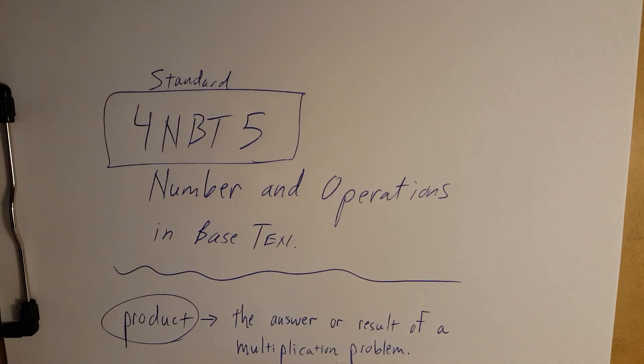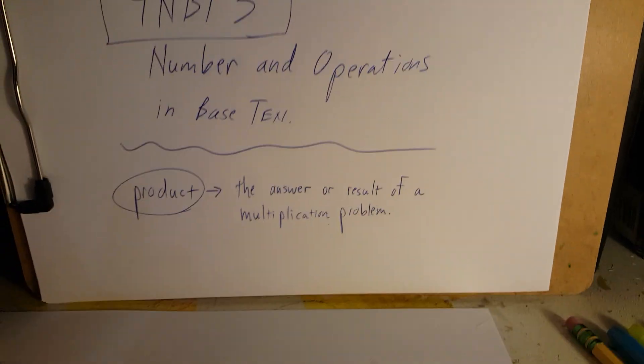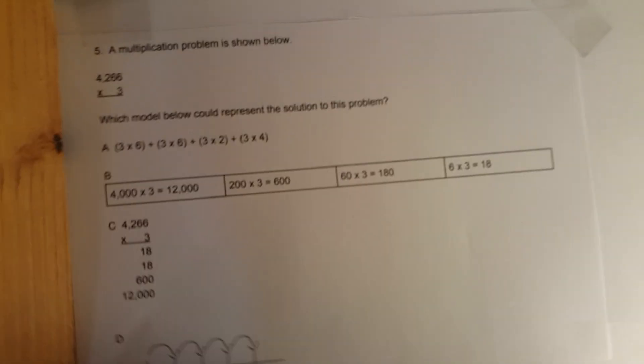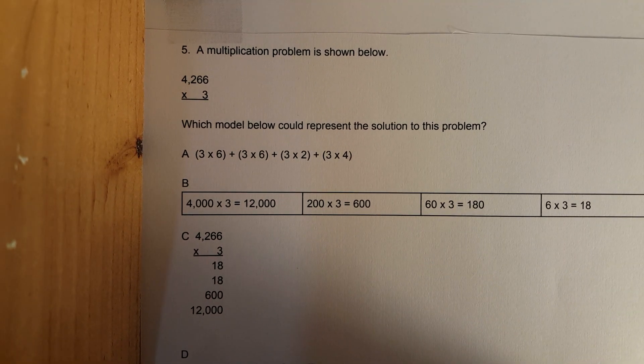Welcome back again. One more problem on standard 4 MBT5 numbering operations in base 10. Here's the problem. You can see choice D way down here, it's gonna get cut off a little, but we'll go through why that's probably not a good choice. Let's get right to it.